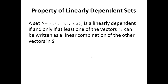Let's look at a few theorems. Number one: a set S is linearly dependent if and only if at least one of the vectors VJ can be written as a linear combination of the others. Since S being linearly dependent means some alpha_J is different from zero but the full linear combination equals zero, we isolate the term alpha_J·VJ, move it to the right-hand side, and divide through by negative alpha_J to express VJ as a linear combination of all the other VIs.